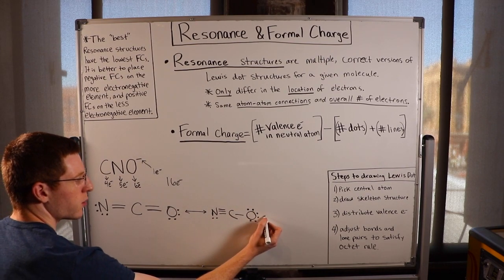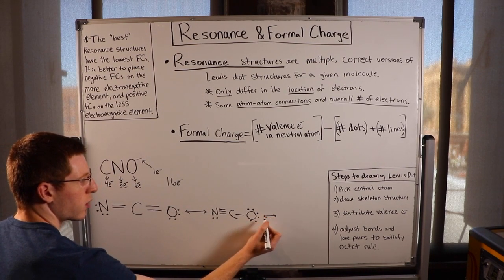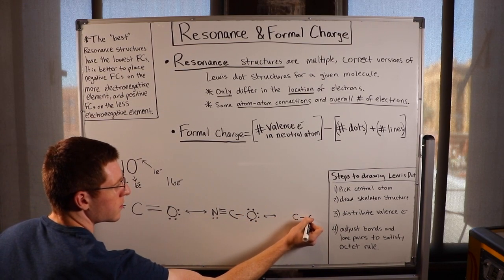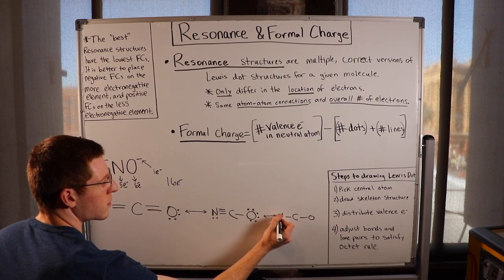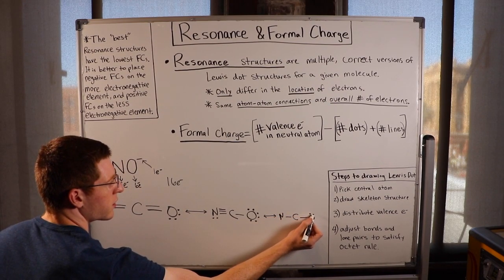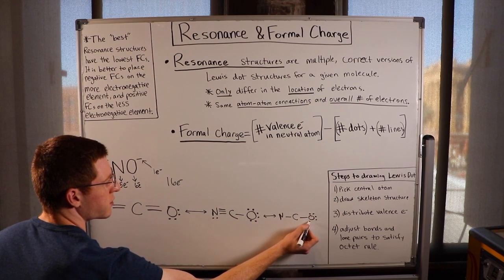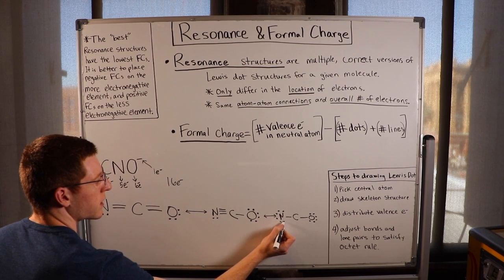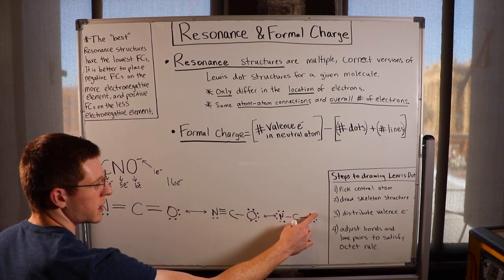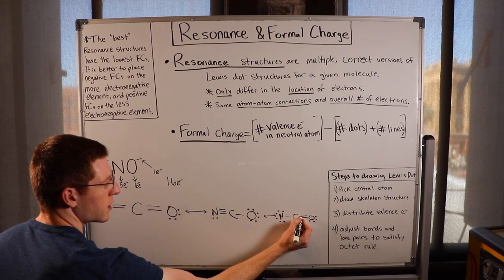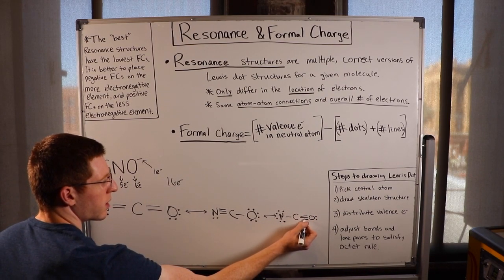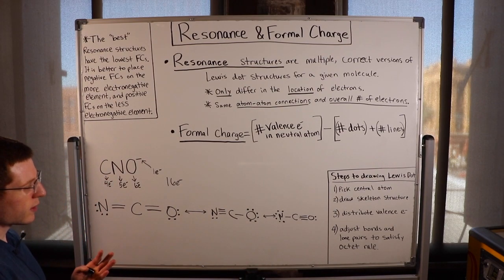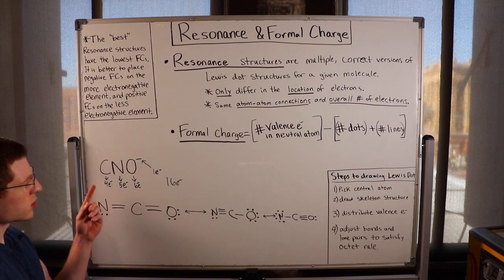We could have done this yet another way — making the triple bond on the oxygen side instead. We draw the electrons on outer atoms, take a lone pair from oxygen to make a double bond, and take another lone pair to make a triple bond on the carbon-oxygen side. So we have three valid Lewis dot structures representing resonance structures for CNO⁻.